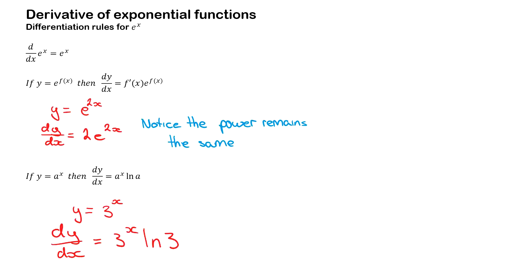Now if we have something like y equals a^x, where a is some sort of base, and we differentiate that, we have a^x times the natural log of the base. So for example, when we have 3^x, we differentiate that, we get 3^x natural log 3.